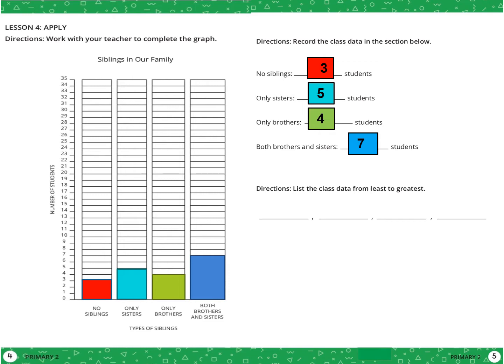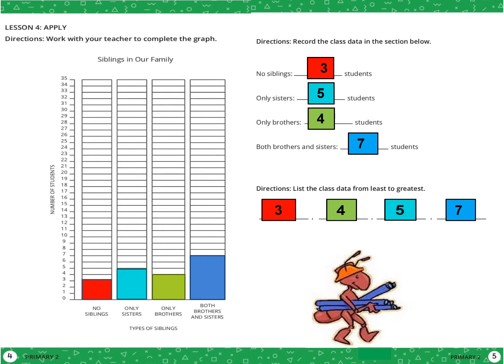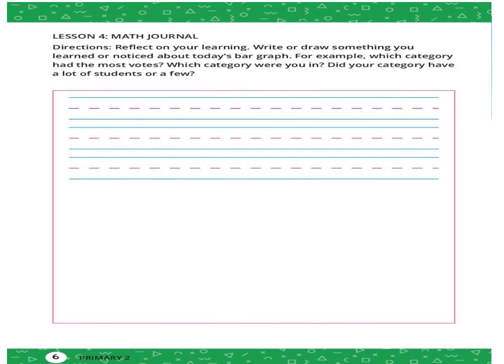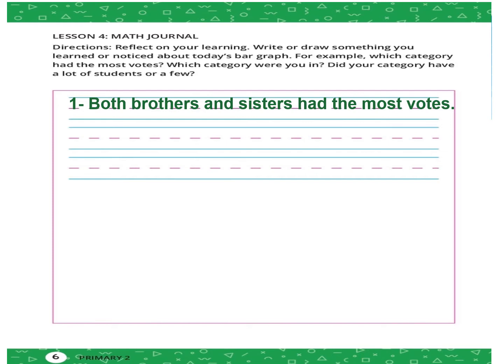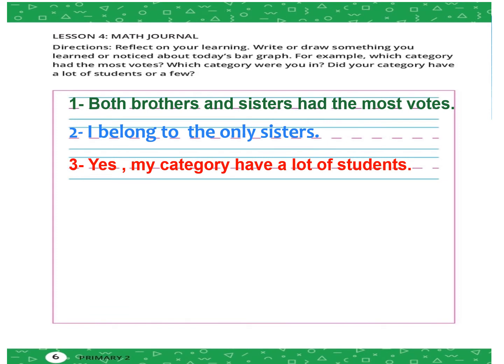List the class data from least to greatest — that is ascending order, from small to big. The smallest number is 3, after 3 is 4, after 4 is 5, after 5 is 7. Reflect on your learning: which category had the most votes? Both brothers and sisters had the most votes. I belong to the only sisters category, and my category has a lot of students.